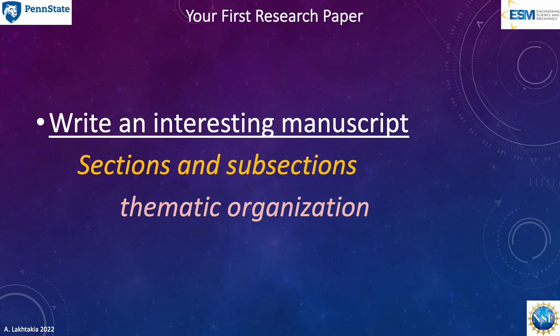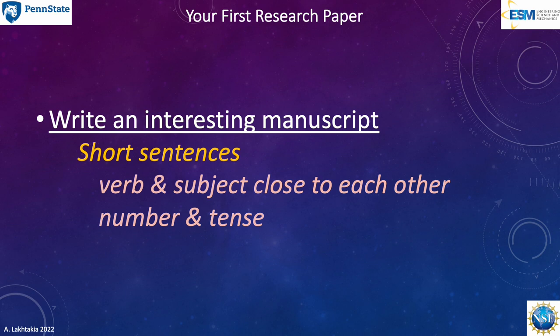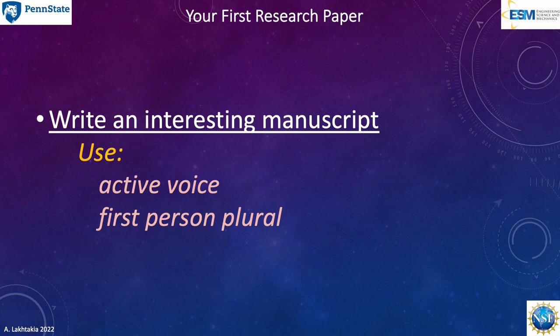Break up your manuscript into sections and subsections. Every section and subsection must have a transparent theme reflected in its heading. The concluding section should contain specific and broad conclusions that could be distilled from the results in the previous sections. In addition, indulge in some speculation as to the implications of these conclusions for future developments and research. An ideal sentence is short, with no more than two verbs and three punctuation marks. Put every verb and its subject noun close to each other. Pay attention to number and tense. Show your enthusiasm by using the active voice, although the passive voice may be adopted carefully for a few sentences in order to create a specific effect.